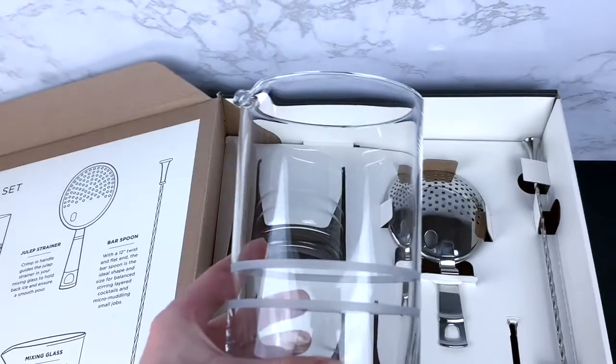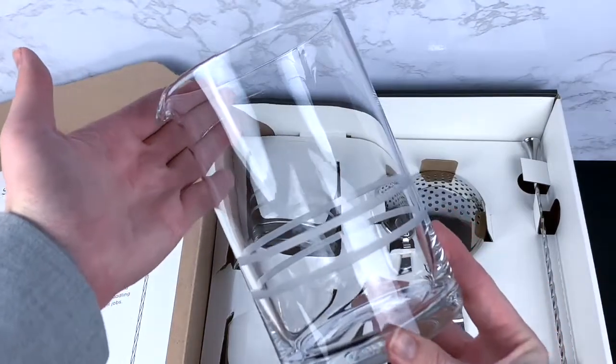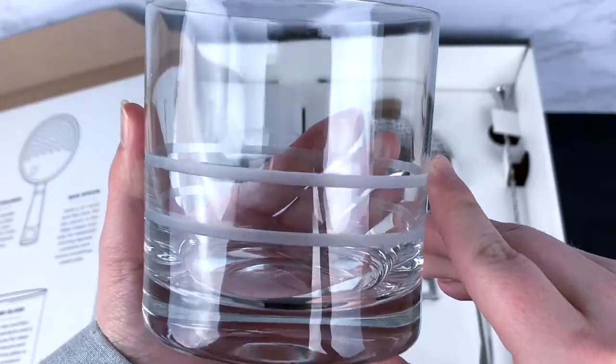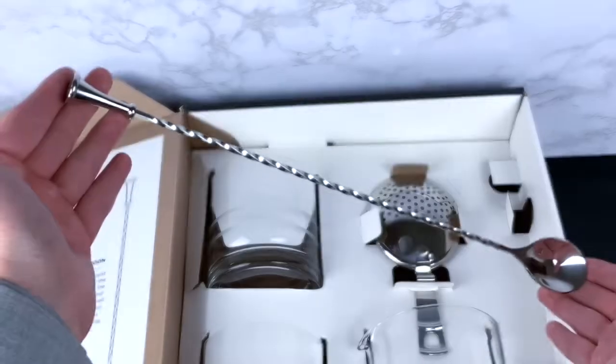In this set, you will receive a 25.5 ounce mixing glass, two double old-fashioned glasses, a julep strainer, and a bar spoon.